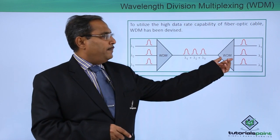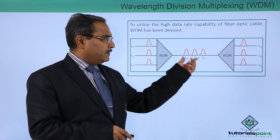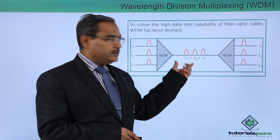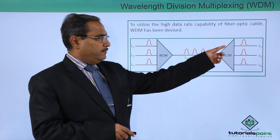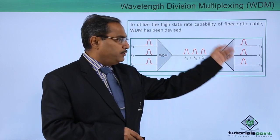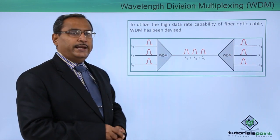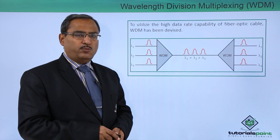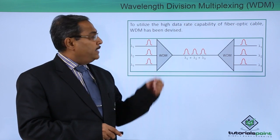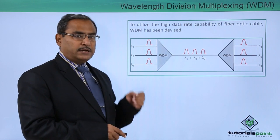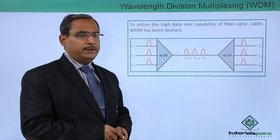At the receiving end, we will have another WDM which will again bifurcate these respective optical energies into lambda 1, lambda 2, and lambda 3 in the split form. This is the way in which wavelength division multiplexing works. Here, lambdas are actually denoting the wavelength for the respective optical energy.